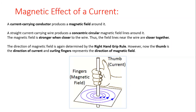The magnetic field is produced in the form of concentric circles. The closer the magnetic field lines, the stronger the magnetic field. And the farther apart the magnetic field lines, the weaker the magnetic field. Remember: closer field lines mean a stronger field, and farther field lines mean a weaker field.